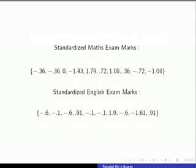To show we can compare two variables, we have z-scores for maths and English exam marks. The highest z-score for maths was 1.79, and for English it was 1.9. We're looking for the highest value because we're dealing with exam marks, where higher is better.